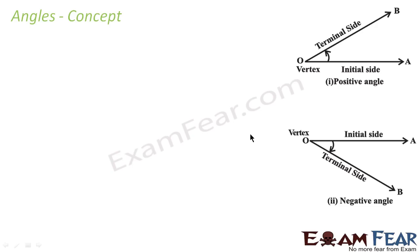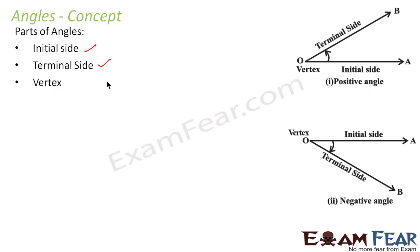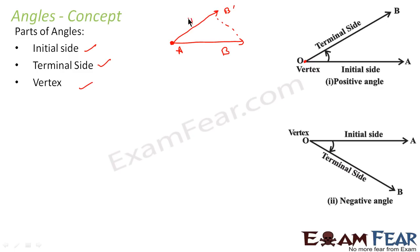Now we will take some concepts related to angle — the parts of an angle. There are three parts: initial side, terminal side, and vertex. The initial side is the side from which we start. The terminal side is the side where we end. The vertex is the point about which we rotate. For example, line AB is the initial side; rotating about point A moves B to B dash, which is the terminal side, and A is the vertex.